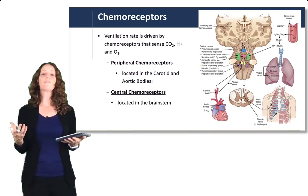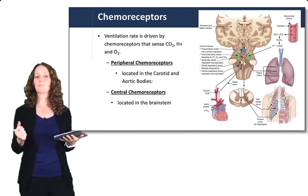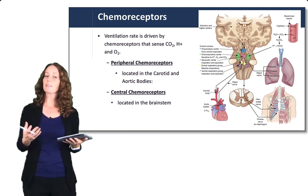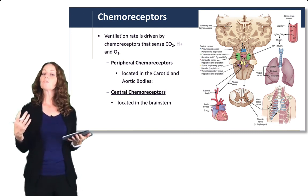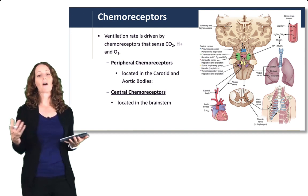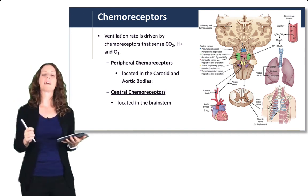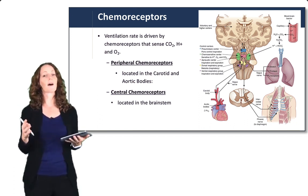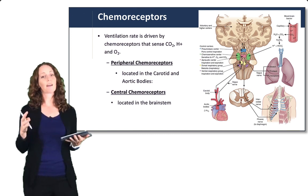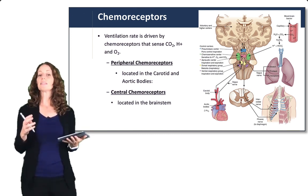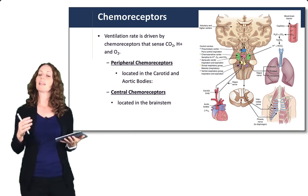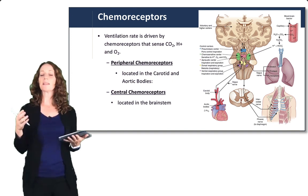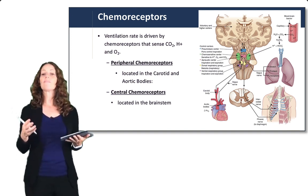The respiratory system does this through signals at the chemoreceptors. Chemoreceptors sense carbon dioxide, pH, and in some cases oxygen, and they change the rate of ventilation based on those levels. We have two primary types: peripheral chemoreceptors located in the carotid and aortic bodies near the carotid and aortic arteries, and central chemoreceptors located in the brain stem. These send signals to the brain stem to regulate the rate of ventilation.